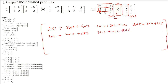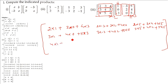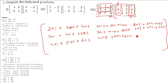Then the second row with the third column: 3 into 5, plus 4 into 4, plus 5 into 5. Then the third row with all the columns: 4 into 1 plus 5 into 0 plus 6 into 3. Then 4 into negative 3, 4 into 2, 5 into 2, 6 into 0. Third column: 4 into 5, 5 into 4, and 6 into 5.